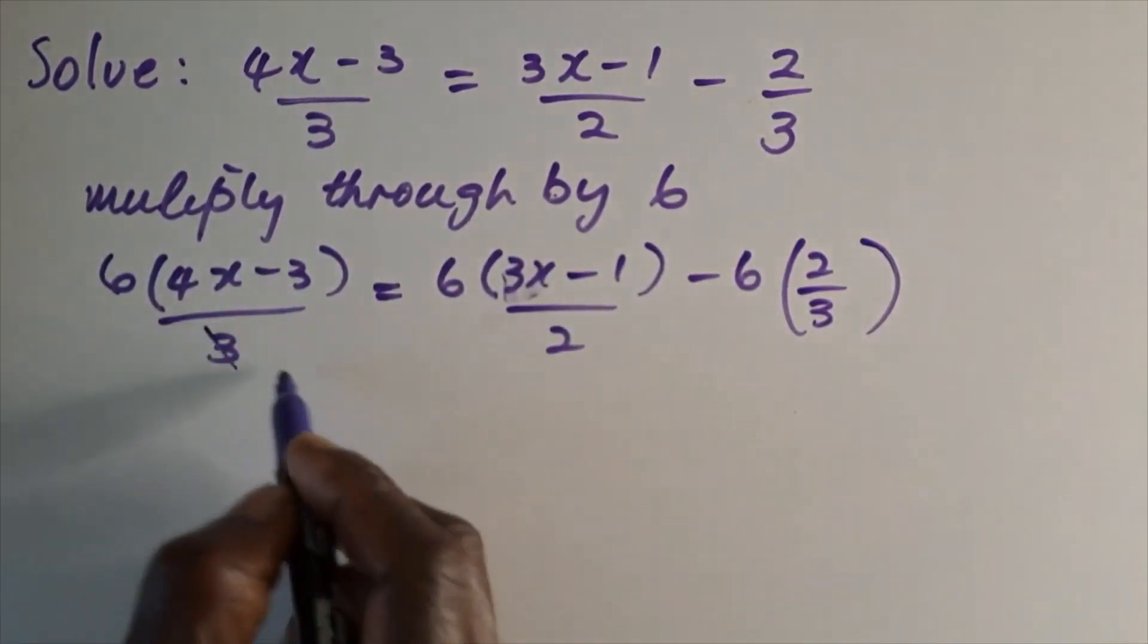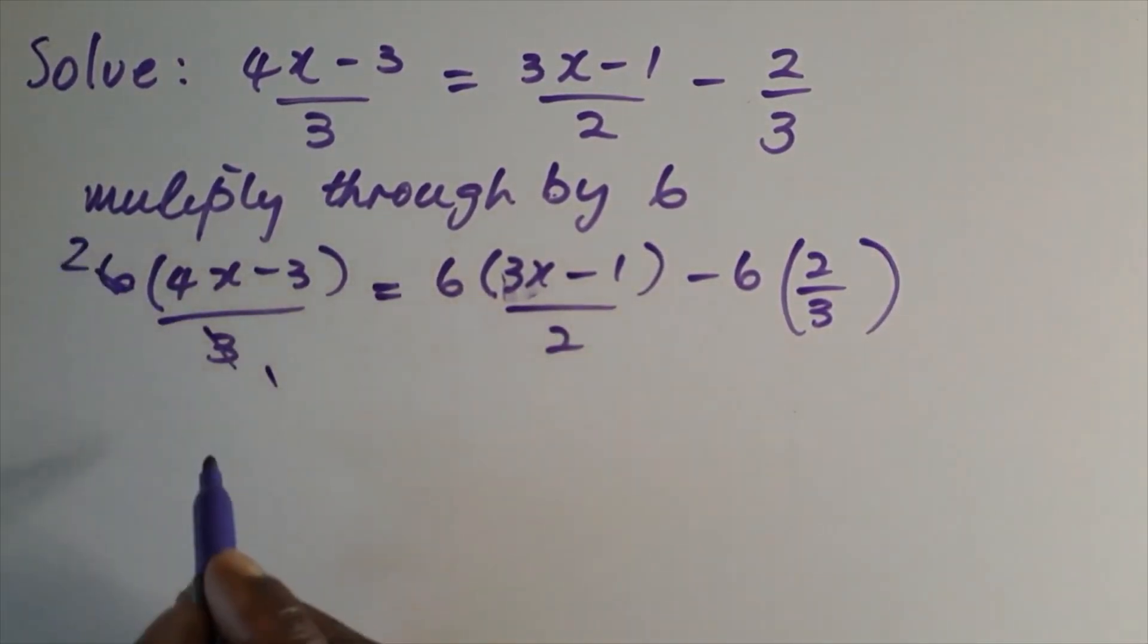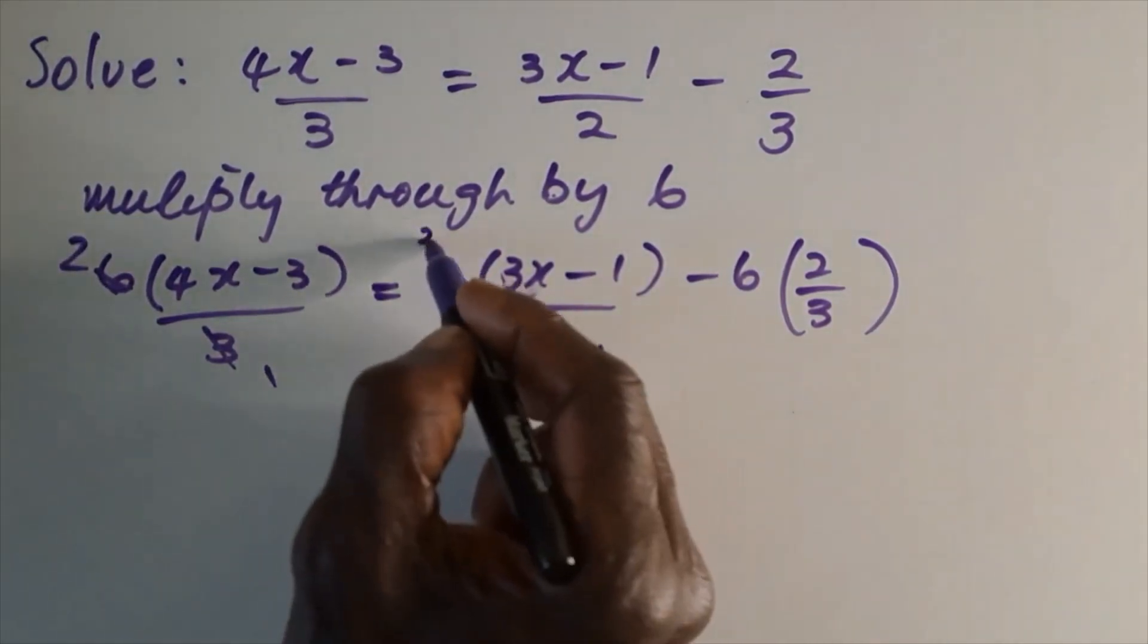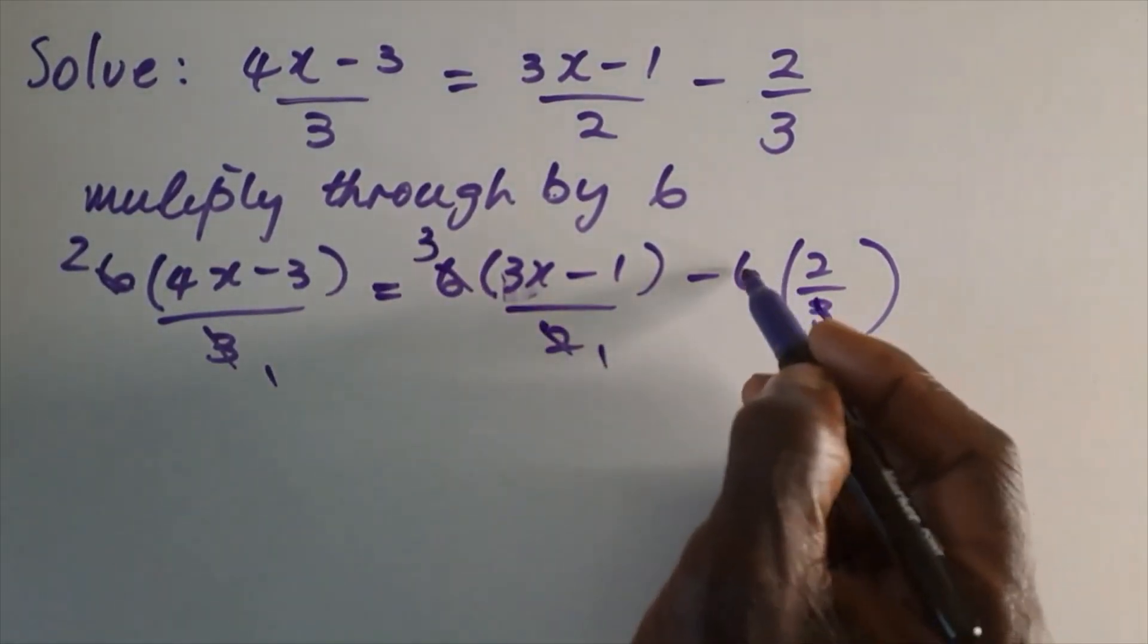So if we cancel here, we have a factor of 2 here, we have a factor of 2 here, we have a factor of 3, and here 2.